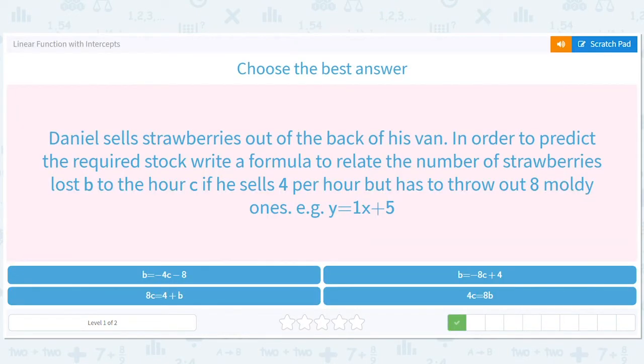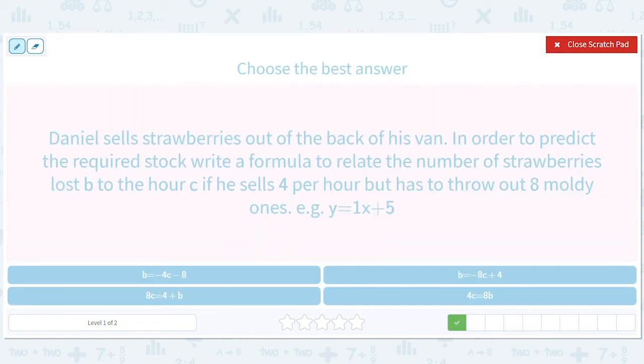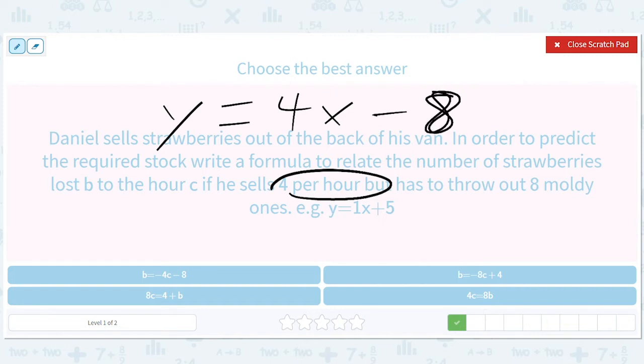Benjamin sells strawberries out of the back of his van. In order to predict the required stock, write a formula to relate the number of strawberries lost to the hour. So we're just going to use y and x. He sells four per hour, so four per hour. That gives you a sense that it's slope. He has to throw out eight moldy ones, so he started down eight. So four x minus eight.